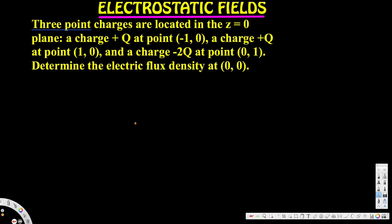Let's look at this problem. Three point charges are located in the z equals zero plane: a charge plus q at point (-1, 0), a charge plus q at point (1, 0), and a charge negative two q at point (0, 1). Determine the electric flux density at (0, 0).